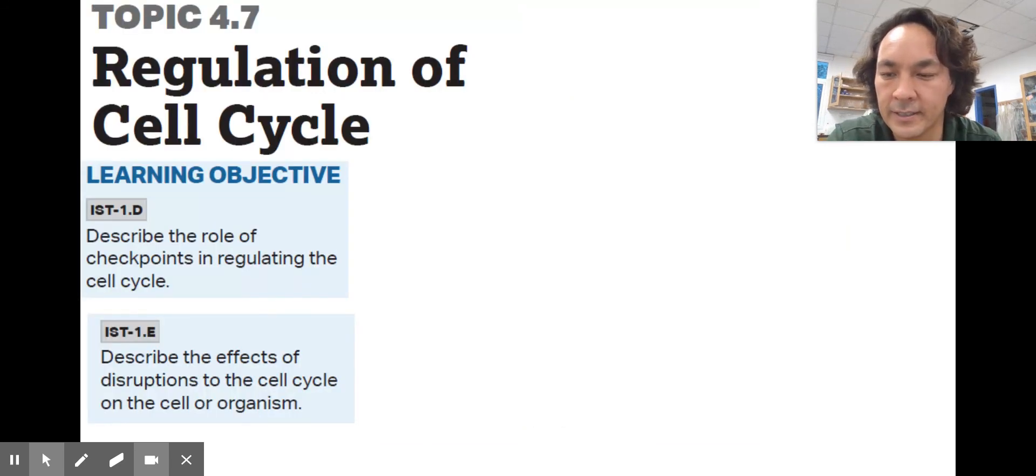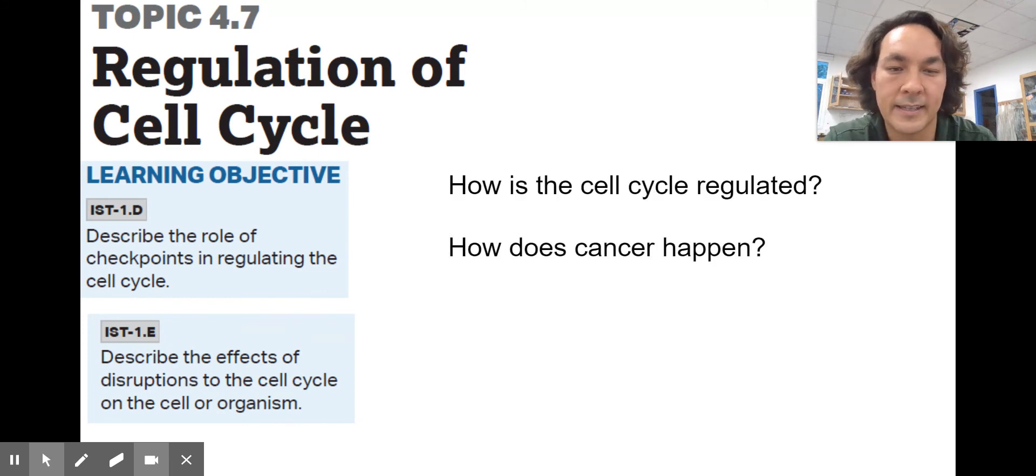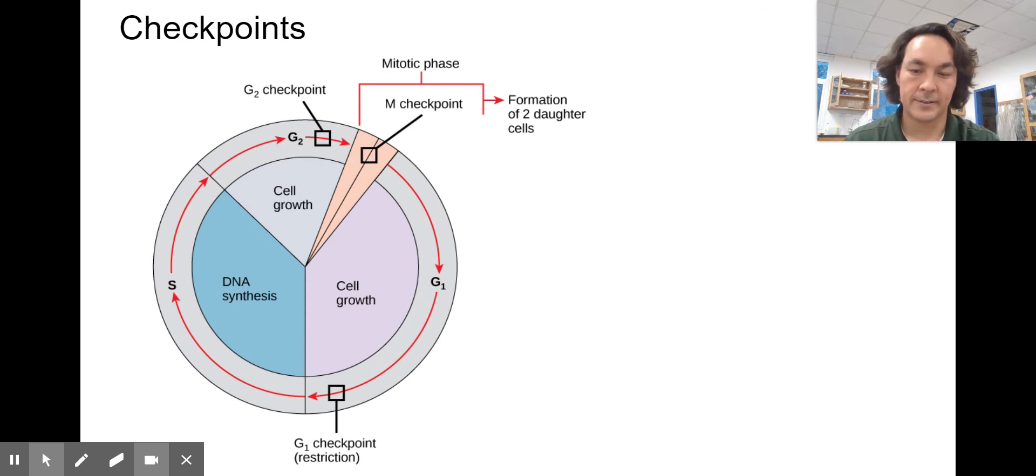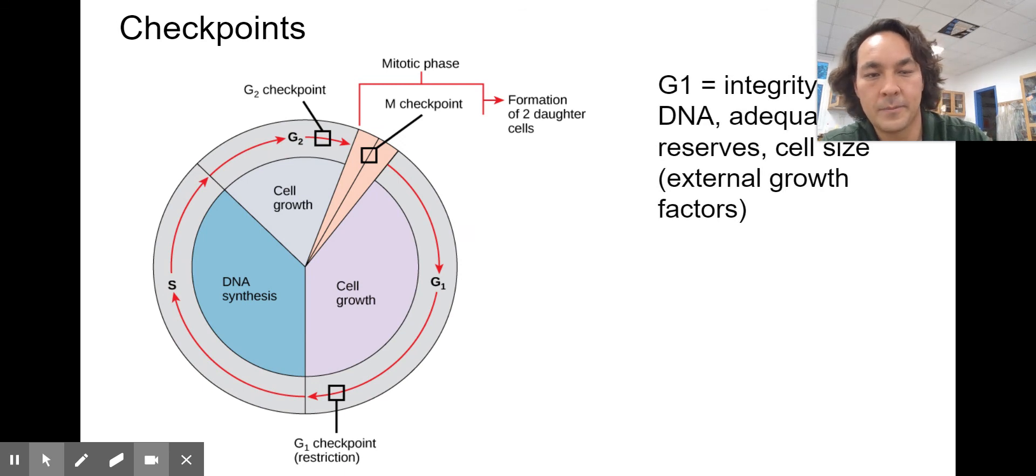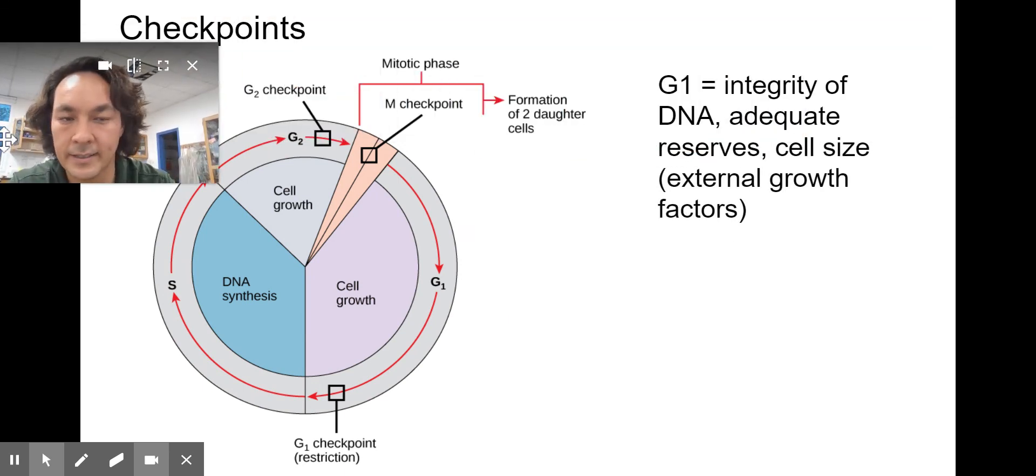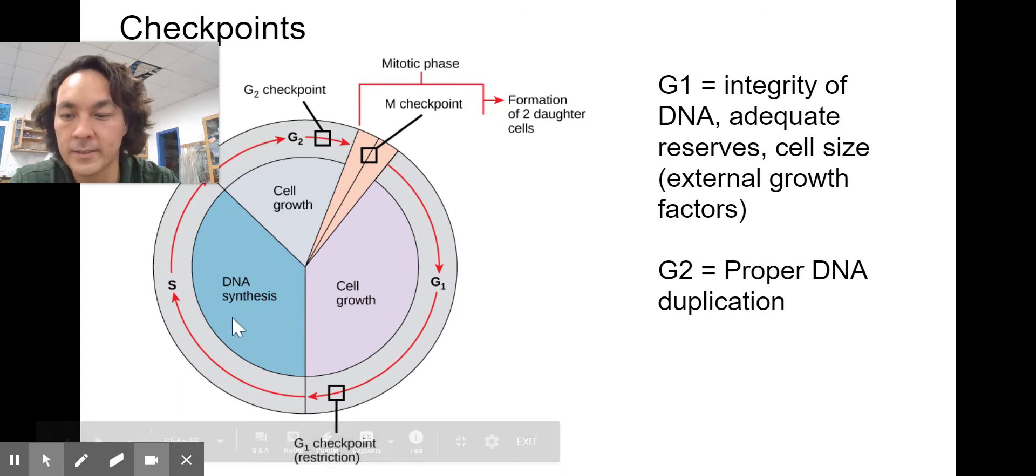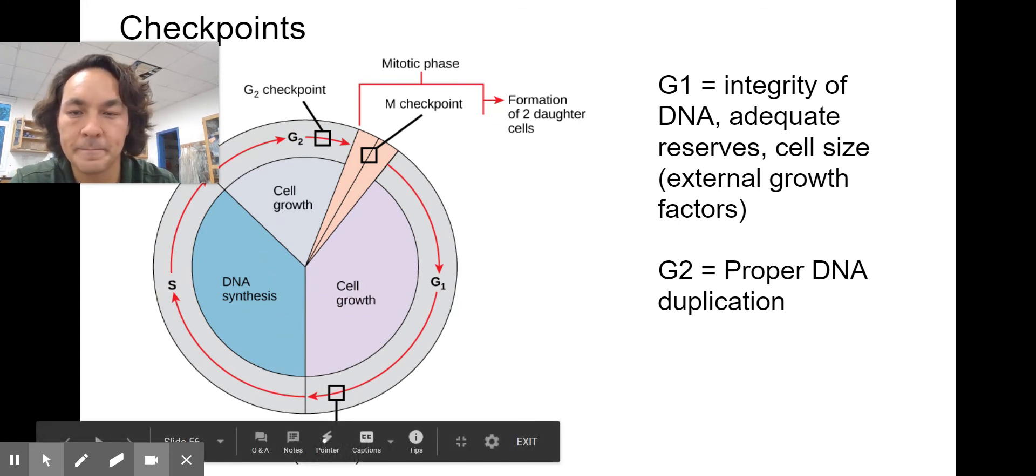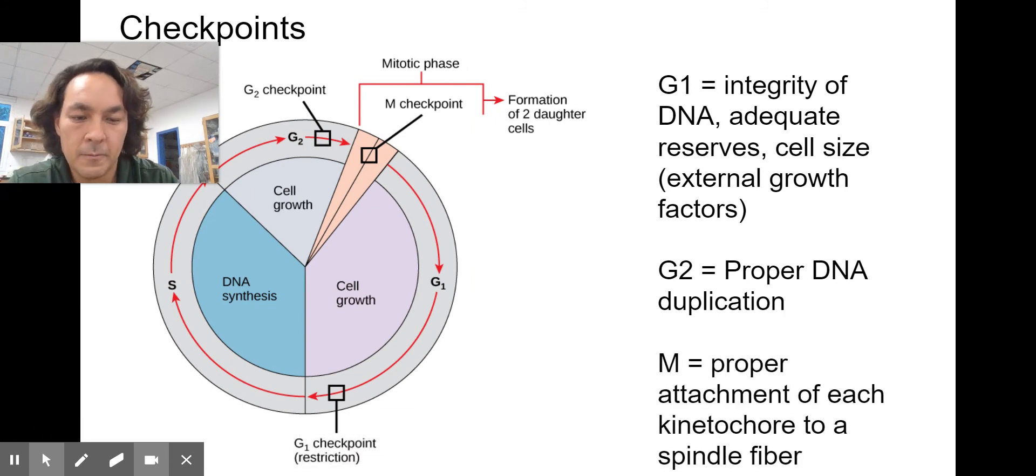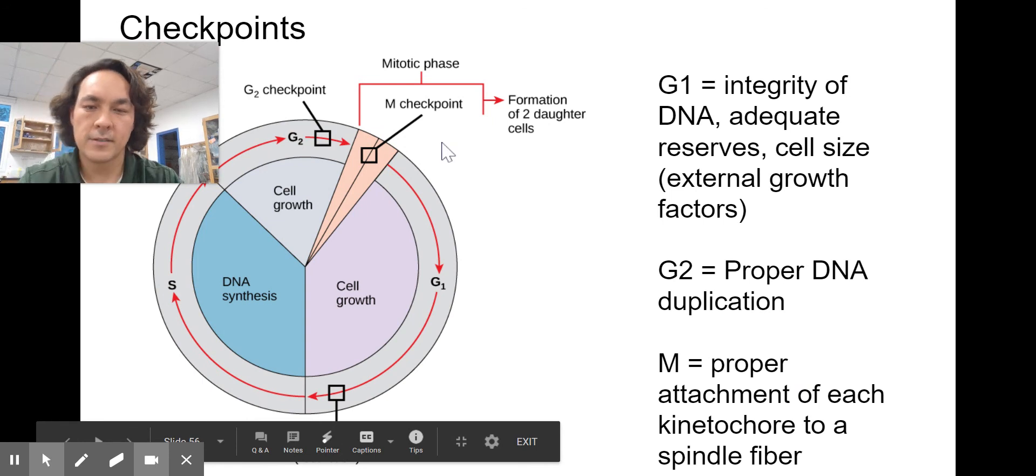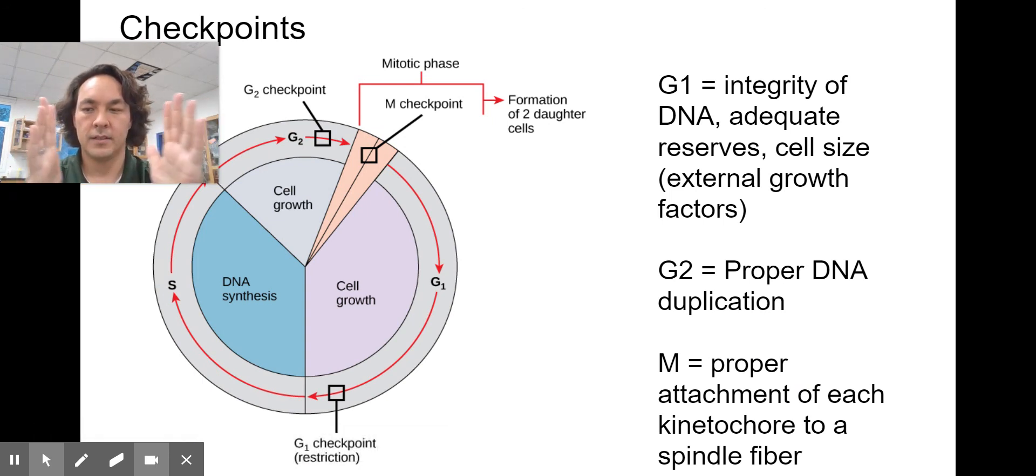Last topic here, regulation of the cell cycle. This is really important. How is the cell cycle regulated and how does cancer happen? The cell cycle is regulated by three checkpoints, the G1, the G2, and the M checkpoint. In the G1 checkpoint, the cell is going to assess whether or not its DNA is good, whether or not it has the adequate reserves or the energy to divide, whether or not it has received a message that it needs to divide as well. During the G2 phase, you can see that it's just gone through S phase, it's gone through synthesis. So in G2, it's going to check that the DNA was properly duplicated. If it wasn't, if something went wrong during DNA synthesis, the cell will undergo apoptosis and die. In the M checkpoint, we're going to make sure that there's proper attachment of each kinetochore to a spindle fiber, so that the chromatids are pulled apart correctly. This happens in M phase.